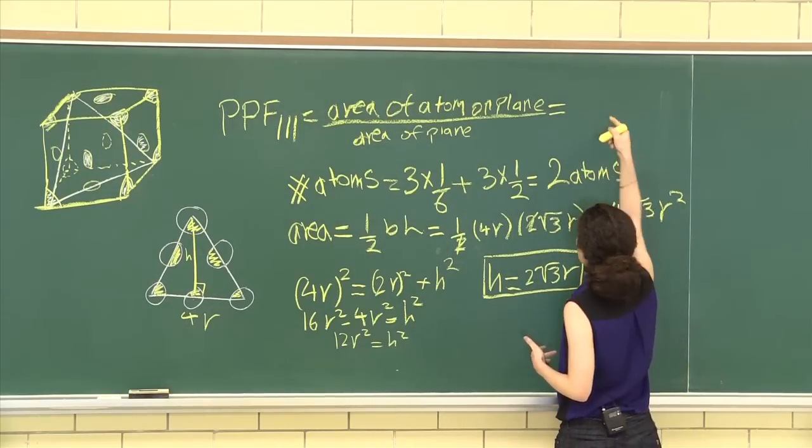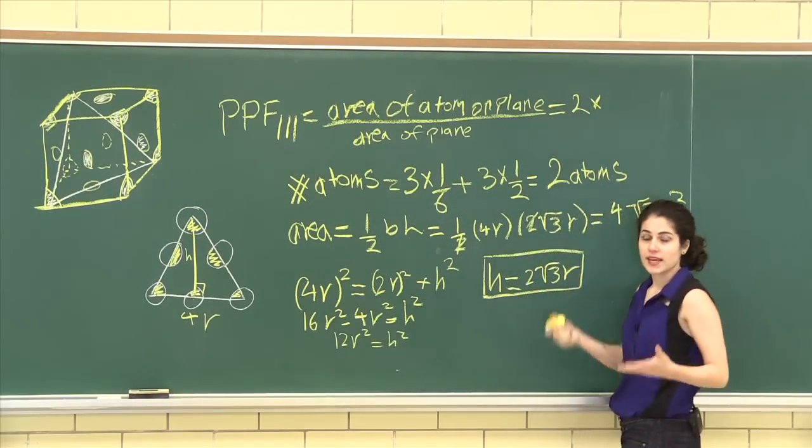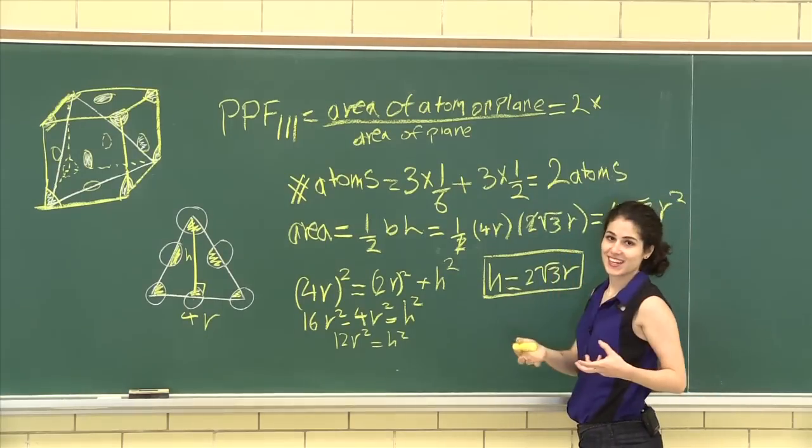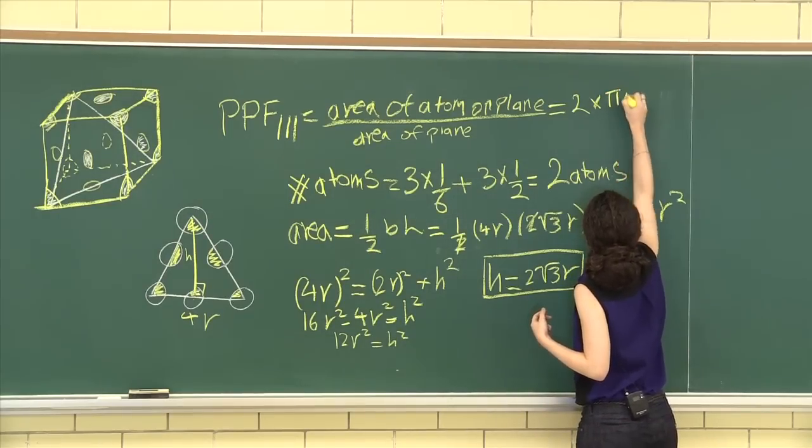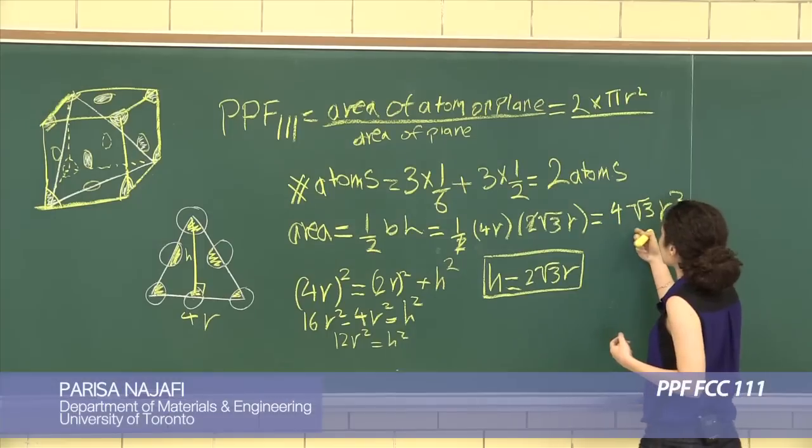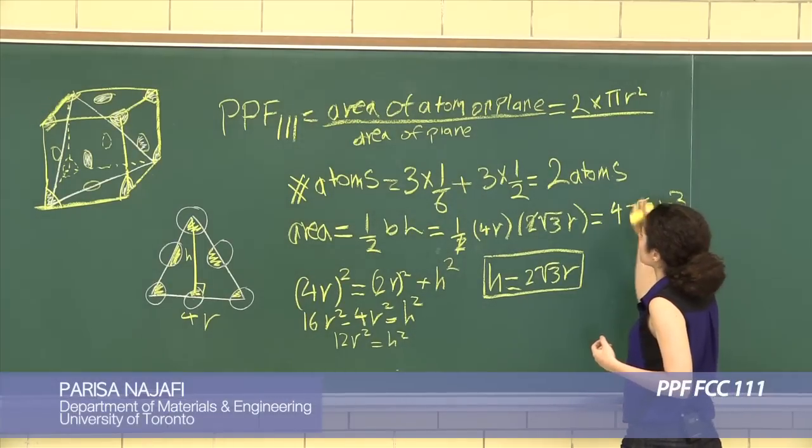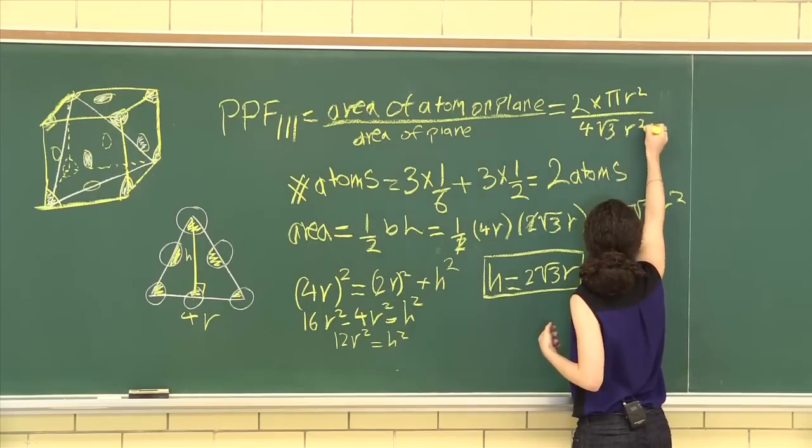Perfect. Now we have our area of the plane, we can complete our planar packing factor. So the area of the atoms on the plane, we have two atoms times the area of a circle, so that's pi r squared, divided by the area of our plane, a simple triangle, so 4 root 3r squared.